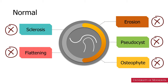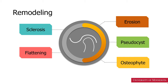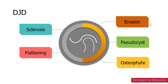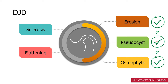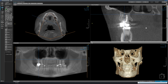If a condyle does not show any of these radiographic features, we'll consider this condyle to be normal. For remodeling of the joints, we'll consider presence of sclerosis and/or flattening — one of these two features will make a diagnosis of remodeling. For degenerative joint disease, we have to look for features of erosion, pseudocyst, or osteophyte. These three features can be present together, or just one of the features will make a diagnosis of degenerative joint disease of the temporomandibular joints.